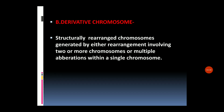The next effect of structural chromosomal aberration is the derivative chromosome. Derivative chromosomes are structurally rearranged chromosomes generated by either rearrangements involving two or more chromosomes, or by multiple aberrations within a single chromosome.